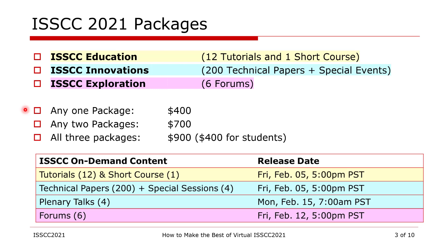Please note that if you are a student, your registration fee is reduced to $400 for the entire conference. The on-demand content of all educational material, technical papers, and special sessions will be made available as of Friday, February 5, at 5 p.m. Pacific Standard Time. The plenary talks will be released on Monday, February 15, at 7 a.m. PST, and the forums will be released on February 12 at 5 p.m. PST. Please note that the on-demand content includes both the presentations for download and their associated videos for streaming.